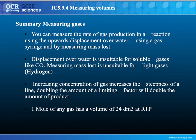In summary, we can measure the rate of gas production using three different methods: upward displacement over water, a gas syringe, and measuring the mass lost. Displacement over water is unsuitable for soluble gases like carbon dioxide, and measuring the mass change is unsuitable for light gases. Increasing the concentration increases the steepness of the line on the graph, showing a faster rate of reaction. Doubling the amount of a limiting factor will double the amount of product. One mole of any gas has a volume of 24 DM³ at room temperature and pressure, so to work out moles you divide the volume of gas by 24.